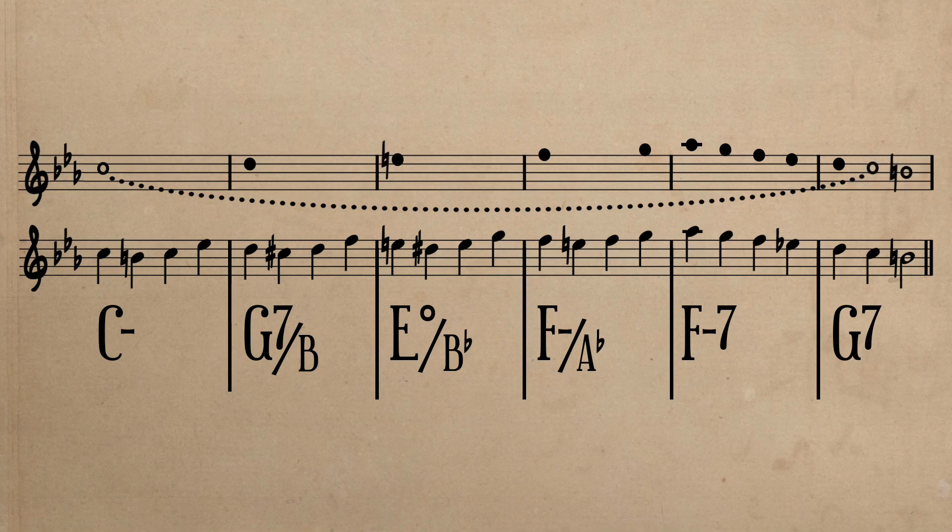The next layer of embellishments provides measures one through four additional notes. These notes embellish the ascending conjunct line with lower neighbor tones that are all a semitone below the structural note of the measure. Once the structural tone is returned to,